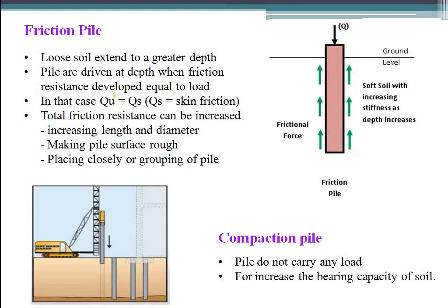Friction Pile: loose soil extends to a greater depth. The pile is driven to a depth where friction resistance developed equals the load. In this case, QU equals QS, where QS is the skin friction. Total friction resistance can be increased by increasing length and diameter, making the pile surface rough, or placing piles close together in groups. There is no hard strata, so when the pile is inserted with load Q at the top, it exerts friction in the opposite direction of pile penetration. This frictional force identifies these as friction piles.